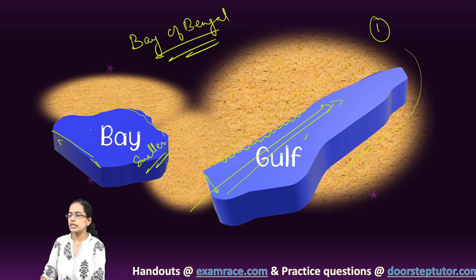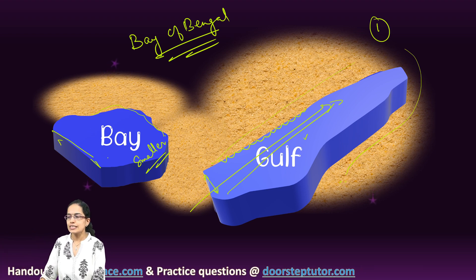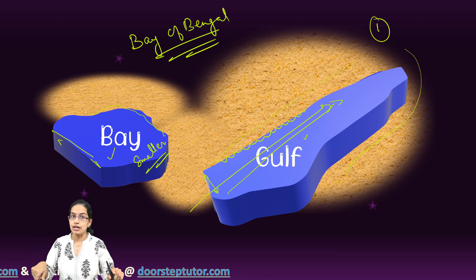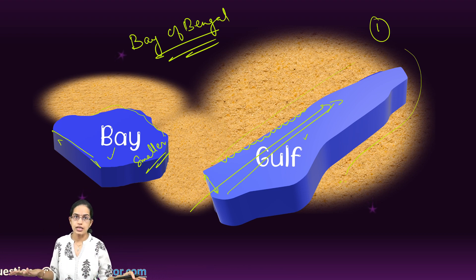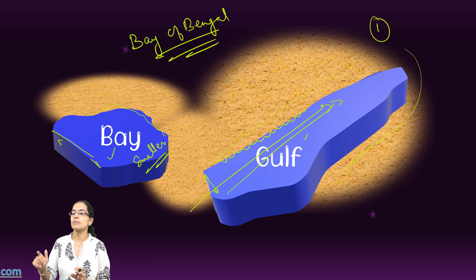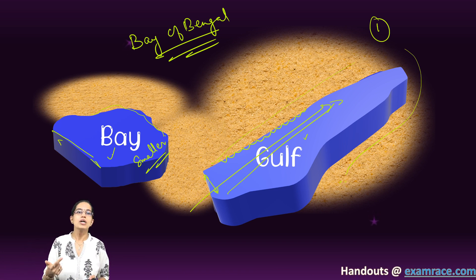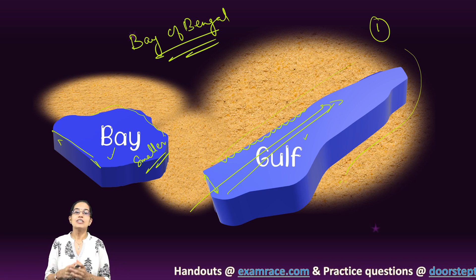A Bay is usually circular or semicircular in shape. Examples of Bay: Bay of Bengal, but when it comes to size it's much, much bigger, so don't get confused — Bay of Bengal is an exception. Bay of Biscay is another good example. When we come to Gulf, Gulf of Mexico is a classic example that you are familiar with.